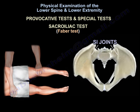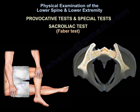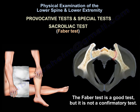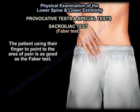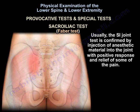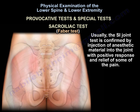You will also perform the sacroiliac joint FABER test. The FABER test is a good test, but it is not a confirmatory test. A finger pointing at the sacroiliac joint posteriorly as the area of pain is as good as a FABER test. Sacroiliac joint pathology is typically confirmed by injection of anesthetic material into the joint with positive response and relief of pain.